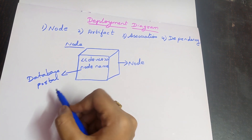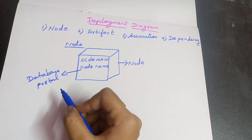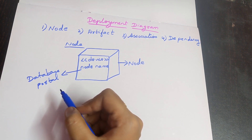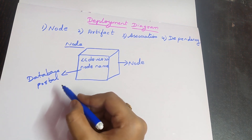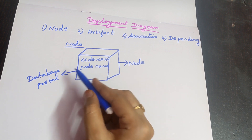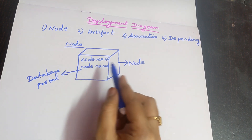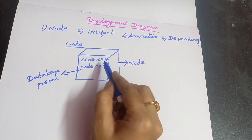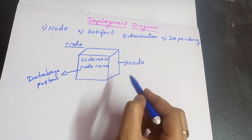Database portal means all the information required about the topic will be stored there. In online shopping, every detail about the customer, the products being sold, and products that have been sold out will be stored in the database portal. So the node name for online shopping system will be 'database portal'. That is how you create a node: draw a 3D box, add the <<device>> stereotype, and write the node name below.